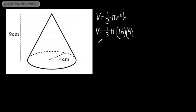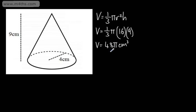Four squared is sixteen, multiplied by the height, which is nine. Nine divided by three gives us three, so this will give us 48 pi centimeters cubed. This is what we call an exact answer because it is in terms of pi. We can get a decimal answer using a calculator, but if this is a non-calculator question and you're asked to leave it in terms of pi, we would simply have 48 pi centimeters cubed. Remember, whenever we have a volume, the units will be cubed.